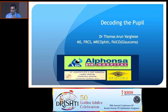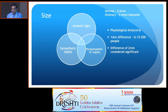This is something that is sometimes worrying for a lot of us, but we will go through it systematically. The size of the pupil depends on the balance between the ambient light and the sympathetic and parasympathetic supply. Physiological anisocoria is seen in up to 15-20% of people, with a difference of 1 mm, but a difference of 2 mm or more is considered significant.